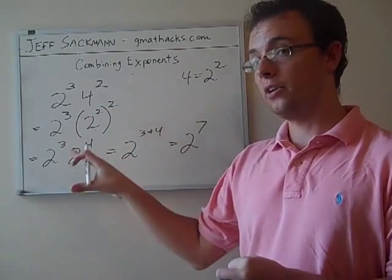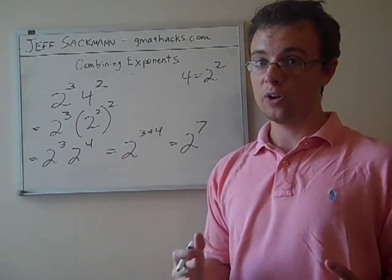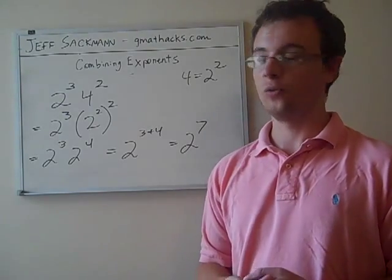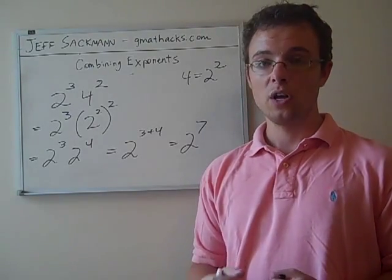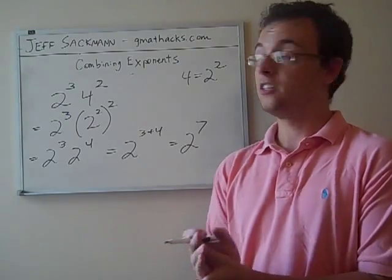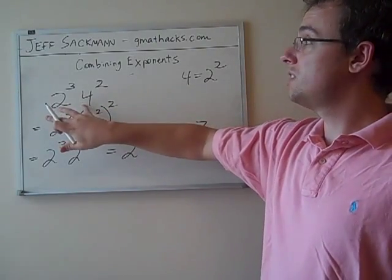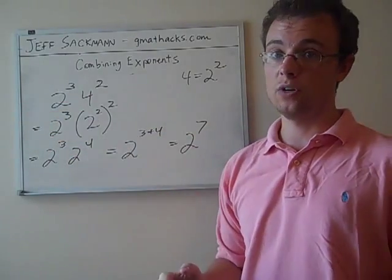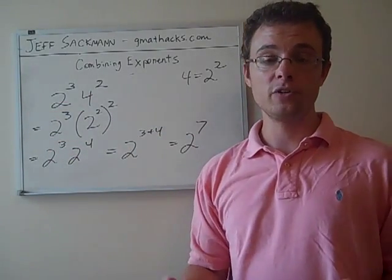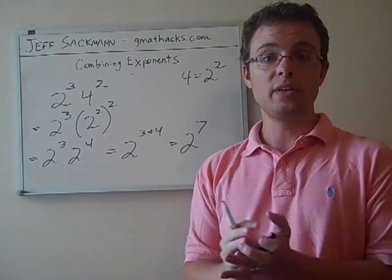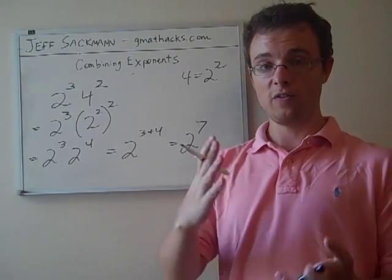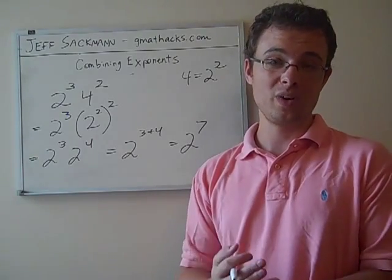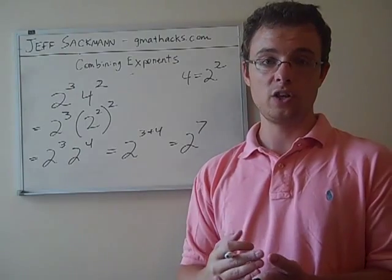As you can probably figure out, looking at what we just did here, this isn't going to work every time. If this were 5 squared, or 7 squared, or 9 squared instead of 4, we'd have a problem. The whole thing is based on being able to convert this number, the 4, into a base that's the same as this one. So, the most common numbers you're going to see on the GMAT anyway, will be the smaller powers of 2, like 4, 8, 16, or maybe the smaller powers of 3. 3 squared is 9. 3 cubed is 27.